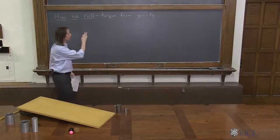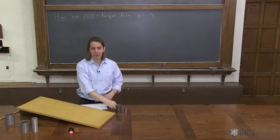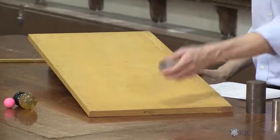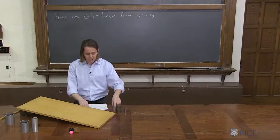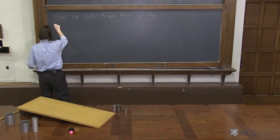Next on how we roll is torque from gravity. And by that we really just mean we're going to roll things down an inclined plane. So here is a cylinder, and there it goes down the plane. We know that the source of the motion is a gravitational force. But let's describe it mathematically.